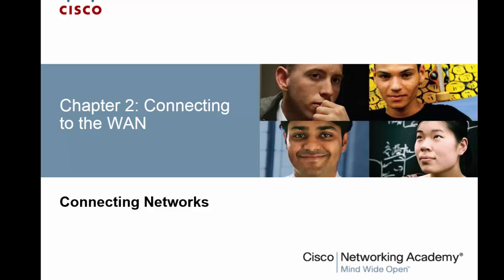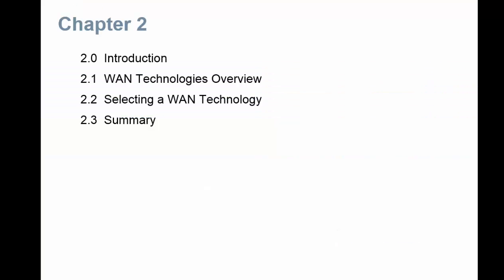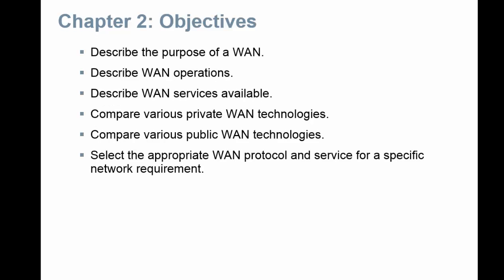Chapter two of Connecting Networks is Connecting to the WAN. In this chapter you have four sections: we're going to do the intro, the WAN technology, selecting a WAN technology, and we'll go over a summary.